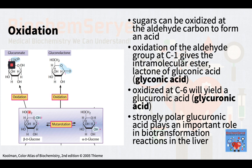Sugars can be oxidized at the aldehyde carbon to form an acid. Technically, the compound is no longer a sugar, and the ending on its name is changed from '-ose' to '-onic acid' or '-onate' — for example, gluconic acid or gluconate. Oxidation of the aldehyde group at C1 gives the intramolecular ester, the lactone of gluconic acid, which is a glyconic acid. Phosphorylated gluconolactone is an intermediate of the pentose phosphate pathway.